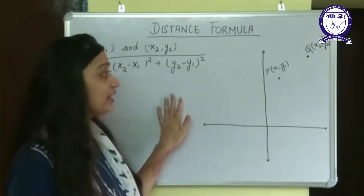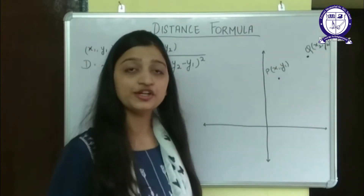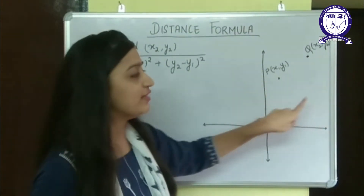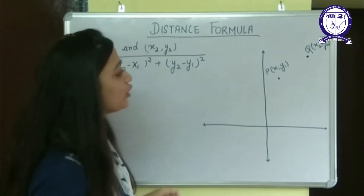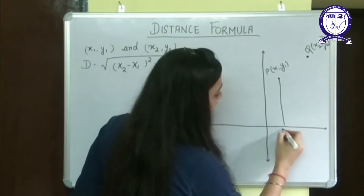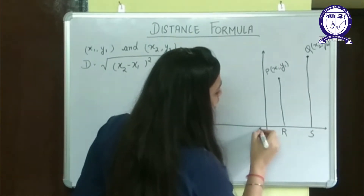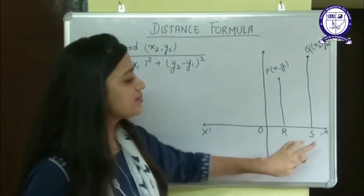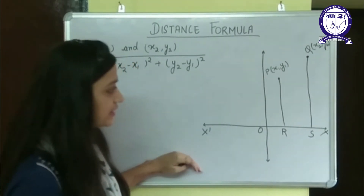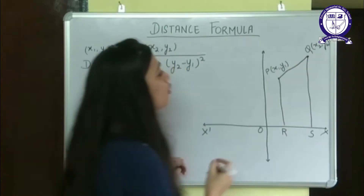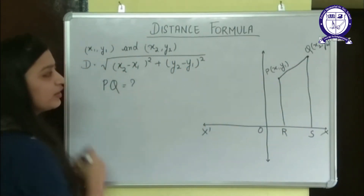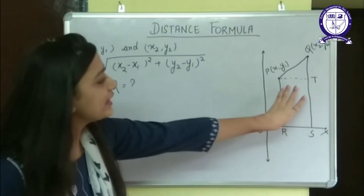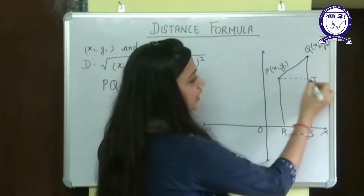How is this formula derived? This derivation is not for the purpose of examination but just for logical understanding. Suppose these two points are P(x1, y1) and Q(x2, y2) on the graph. I am going to draw PR and QS perpendicular on the x axis. We need to find the distance PQ. I will join a line and name it T. We can see that triangle PQT is a right angle triangle.